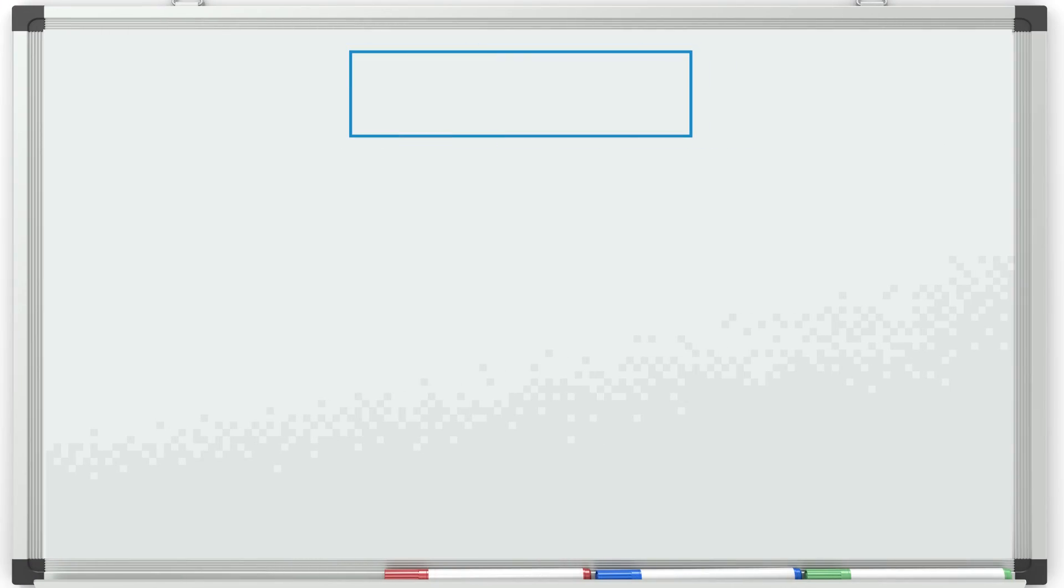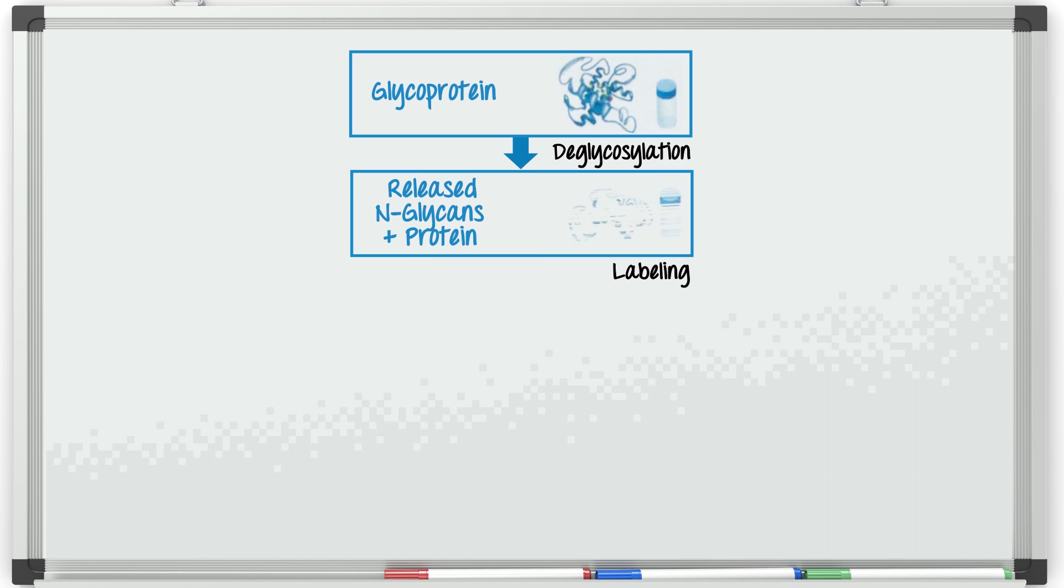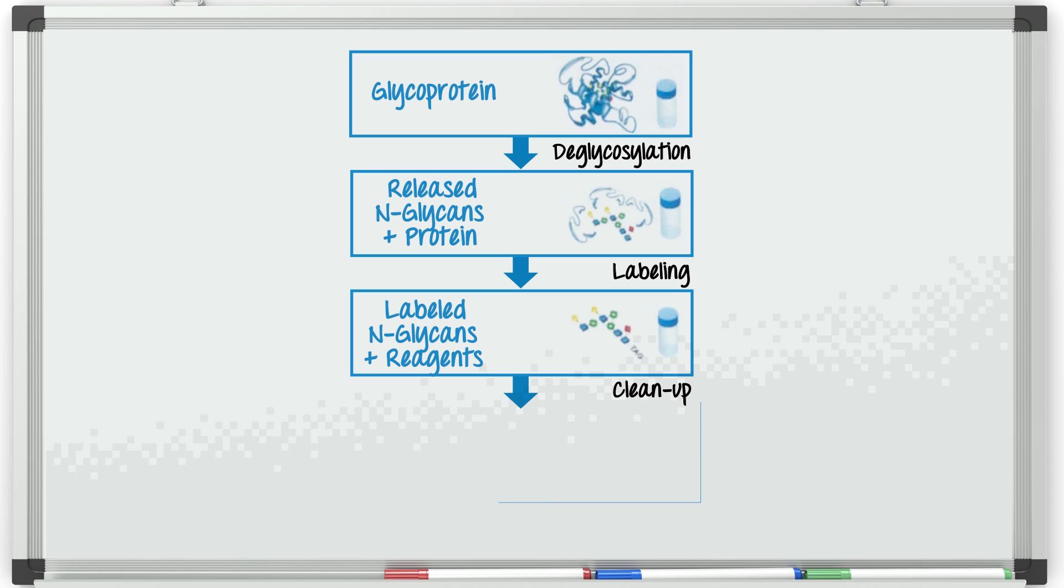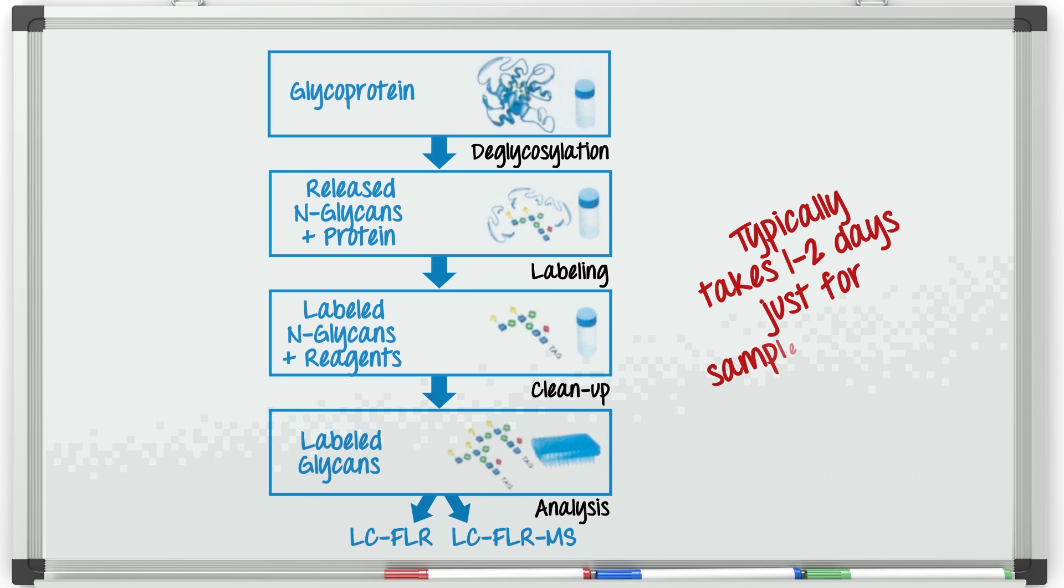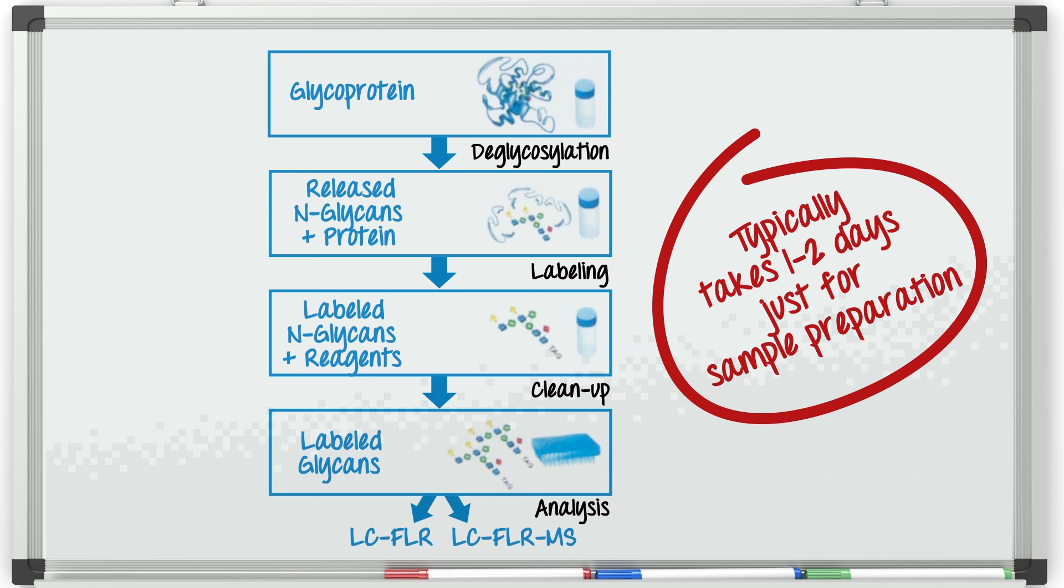N-Glycan sample prep consists of several key steps: deglycosylation in which glycans are released from a glycoprotein, labeling in order to introduce some chemical entity to the glycan so that they can be detected, and a cleanup step to extract the labeled glycans from deglycosylation and labeling reaction byproducts. In a conventional approach to N-Glycan sample prep, this process is laborious due to lengthy procedures and that some steps have to be iteratively performed. The end result is that the sample prep time often amounts to something greater than one working day.